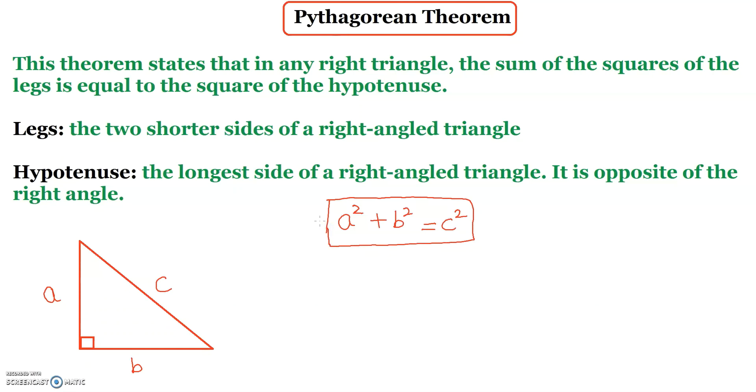The sum of the squares of the legs, so we are squaring the legs and it's equal to the square of the hypotenuse. Let's just look at one example.